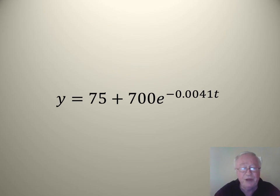And this is what you get. You get y equals 75 plus 700 e to the minus 0.0041t. You don't need to understand or worry about the formula just the pattern. It's exactly the same pattern that we got for the exponential decay of the drugs in the human body.